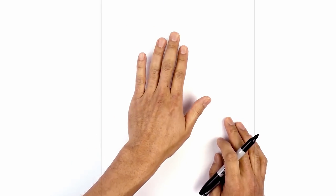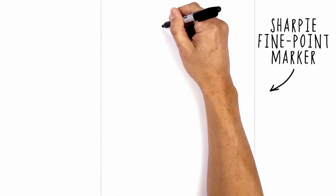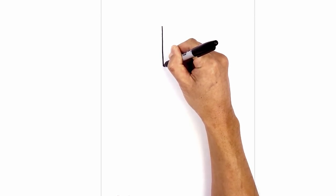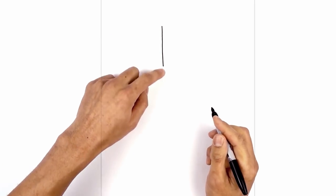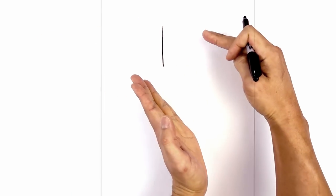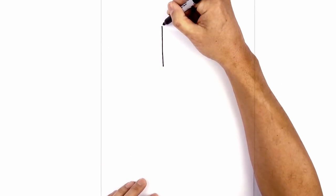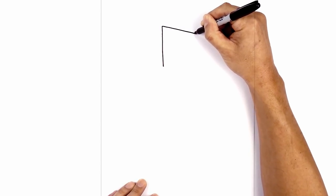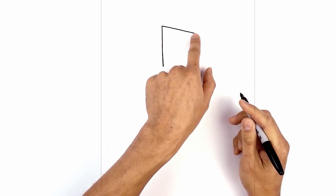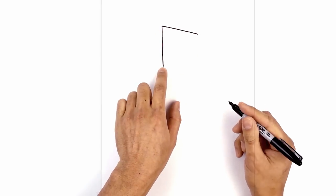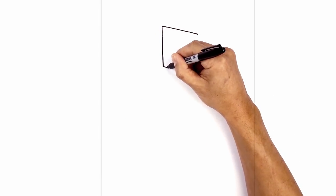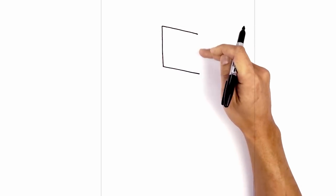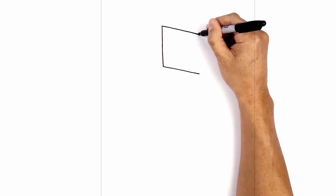Let's start at the very top of our page with a vertical line for the head. Starting at the top, we'll come straight down towards the chin. From here, I'm going to take these two points and draw two angled lines coming down towards the right, starting from the top of the head, coming down at an angle towards the opposite side. Now let's take that same line and draw it from the bottom, starting on this corner, coming down at the same angle. Now I'm going to connect those two points with a straight line.